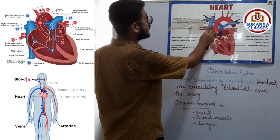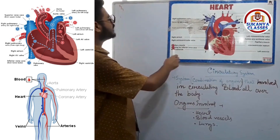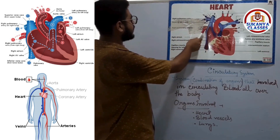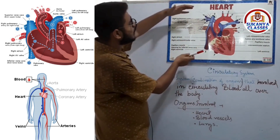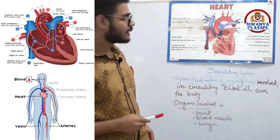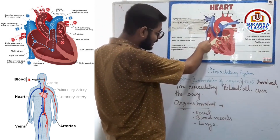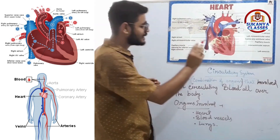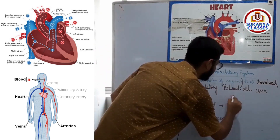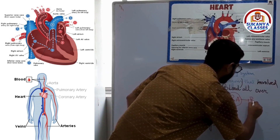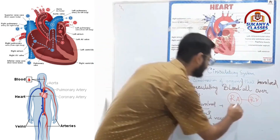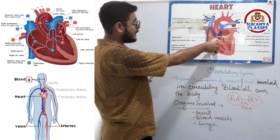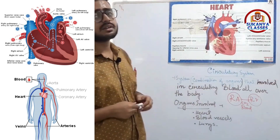First, deoxygenated blood loads into the right atrium via the superior vena cava and the inferior vena cava. Both the superior vena cava and inferior vena cava load blood into the right atrium. After that, blood passes from the right atrium into the right ventricle.